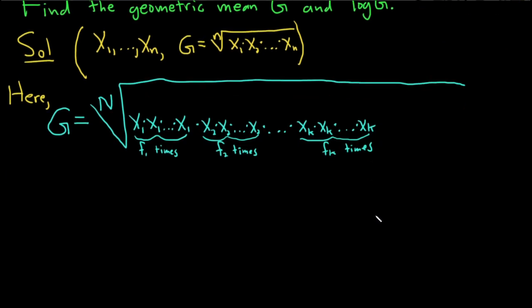So this is equal to, G is the Nth root of, and basically if you have x1 f1 times you just get x1 to the f1. Same thing here, you get x2 to the f2 times dot dot dot times xk to the fk, and this would be the formula for the geometric mean.